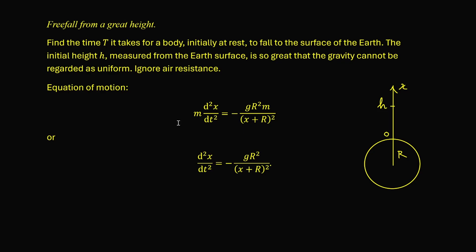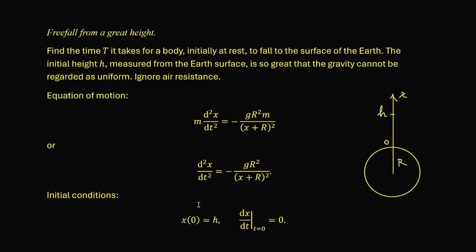Canceling out m on both sides, we get d²x/dt² equals minus gr² over (x + r)². This is a nonlinear second order differential equation. We also have the initial conditions: x(0) = h, and the initial velocity dx/dt at t = 0 is equal to zero, because the object is initially at rest. This completes the formulation of an initial value problem.